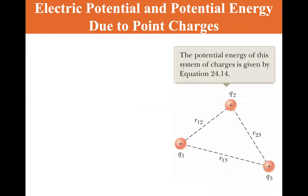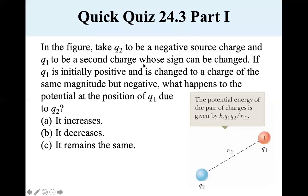So if you have multiple charges, here we have q₁, q₂, and q₃. The electric potential is just the superposition sum: kₑ times q₁ q₂ over r₁₂ plus q₁ q₃ over r₁₃ plus q₂ q₃ over r₂₃.